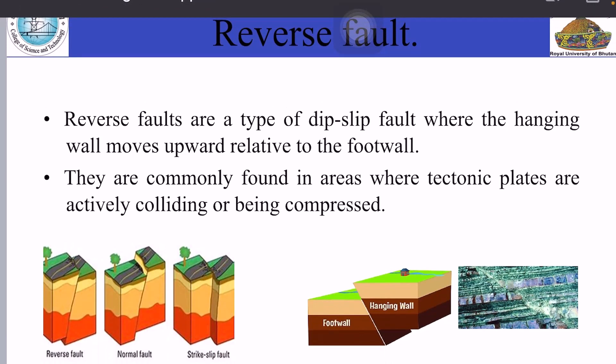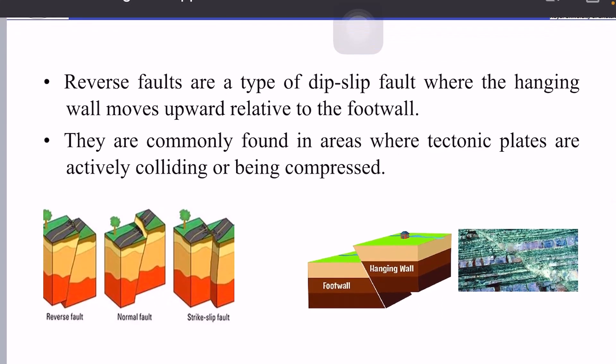Number two: reverse fault. Reverse faults are a type of dip-slip fault where the hanging wall moves upward relative to the footwall. They are commonly found in areas where tectonic plates are actively colliding or being compressed. In a reverse fault, the hanging wall moves upward and the footwall moves downward — completely opposite to what a normal fault is. There are two types of reverse faults: thrust faults and overthrust faults.